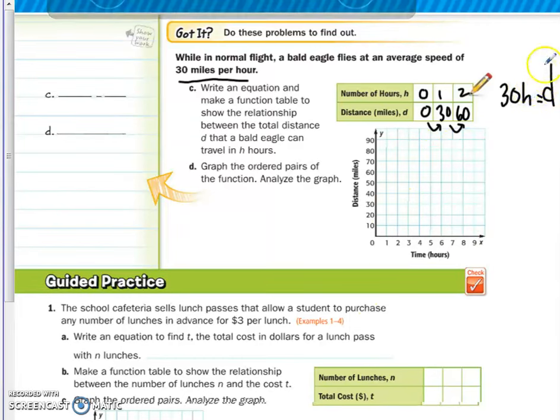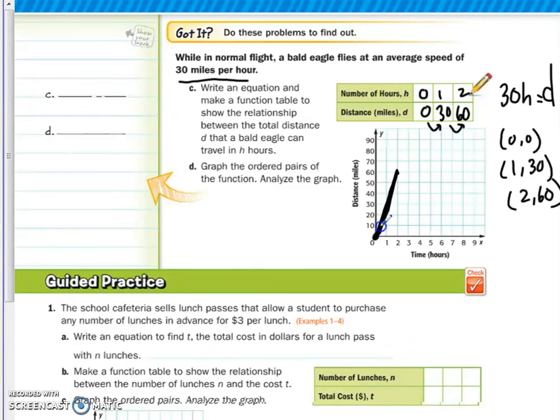Now that we have our equation and we have three ordered pairs, 0, 0, 1, 30, and 2, 60, we can now graph these. The first one is 0, 0. The next one, 1, 30. And then finally, 2, 60. Your graph should look like this, somewhat steep, which shows you the high speed that the eagle travels.